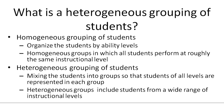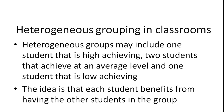Homogeneous groups are groups where learners with similar skills, similar ages, or from similar cultural groups are grouped together. In a homogeneous group, all students perform at roughly the same instructional level. In a heterogeneous group, students of all levels are represented in each group, including students from a wide range of instructional levels. Grouping students in a heterogeneous group is quite useful in a multi-level situation.